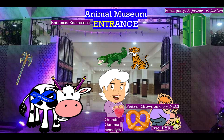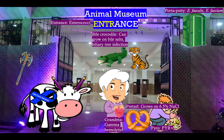Despite her grandson being a brat, grandma brought him a pretzel to snack on while waiting in line. Pretzels are salty — think 6.5% sodium chloride. Enterococcus grows on 6.5% sodium chloride. There's also a bile crocodile right in the middle, pertaining to both — both can grow on bile salts and cause biliary tree infection, though mostly enterococcus. The port-a-potty also reminds us of UTI — enterococcus causes 5% of UTI infections.